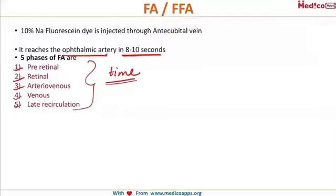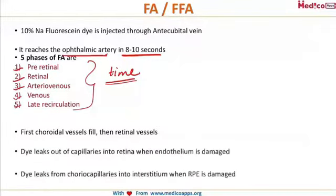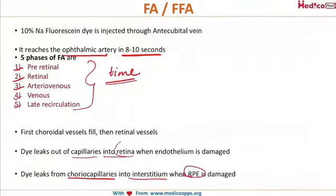The first choroidal vessels fill, then the retinal vessels fill. In pathological cases, if the endothelium of the blood vessel is damaged, the dye will start leaking out — it leaks out of the capillaries into the retina when the endothelium is damaged. It leaks out from the choriocapillaris into the interstitium when the RPE is damaged.